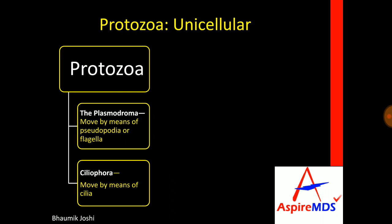Protozoa can be further divided based on the mode of movement. One is plasmodroma, which move by means of pseudopodia or flagella, and the other one is ciliophora, which move by means of cilia.